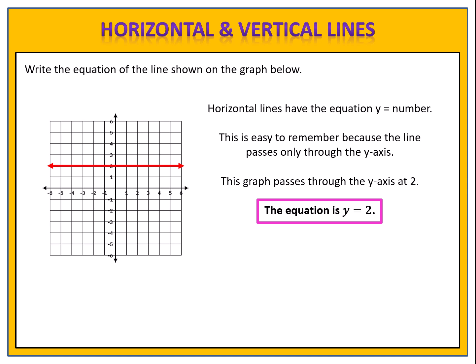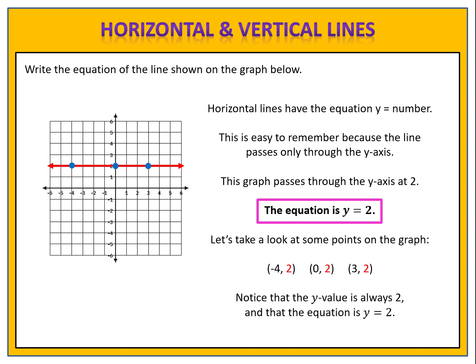Notice that if we look at some points on the graph — negative 4 comma 2, 0 comma 2, and 3 comma 2 — the y-value is always 2, and the equation is y equals 2. So when we have the graph of y equals 2, we're saying that every single point on the line has a y-value of 2.